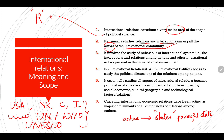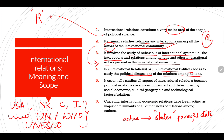International Relations involves the study of the behavior of the international system, its interactions and relations among nations and other international actors present in the international environment. IR or international politics seeks to study the political dimensions of relations among nations — basically, IR talks about the relationship of countries with other countries, be they neighboring or rival countries.